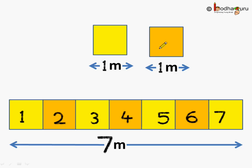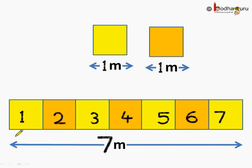Now, suppose each of the square tiles used for measuring the land has a side equal to 1 meter. Since it is a square tile, all the sides have the same length — this is 1 meter, this is 1 meter, and this is also 1 meter. So, if we put 7 tiles in a row, the length will be 7 meters, because each tile is 1 meter wide: 1 meter, 1 meter, 1 meter, 1 meter, 1 meter, 1 meter, 1 meter — the total comes out to be 7 meters. This means the length of 7 tiles is equal to 7 meters.